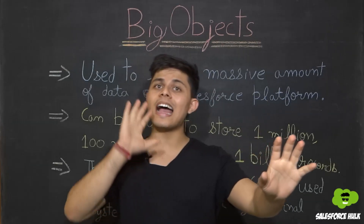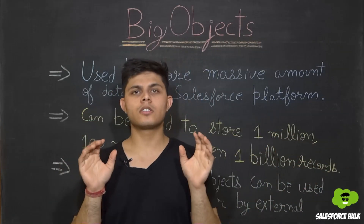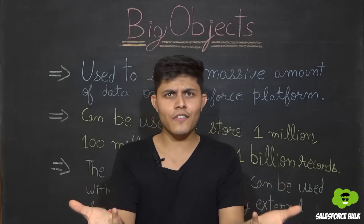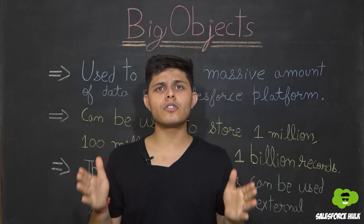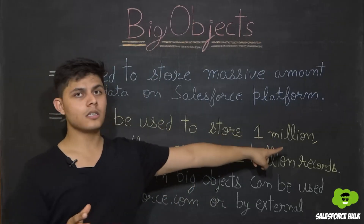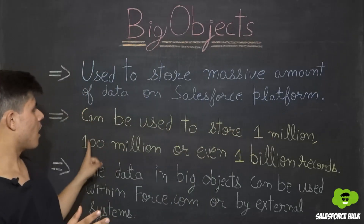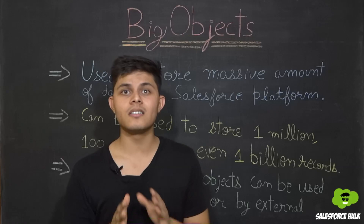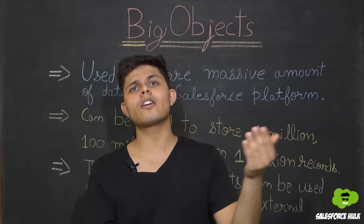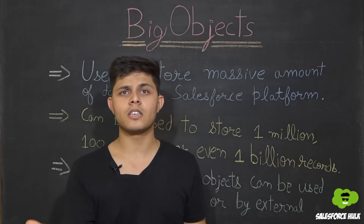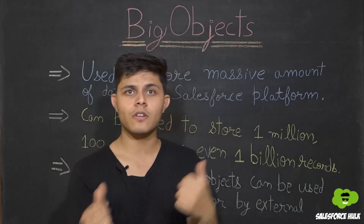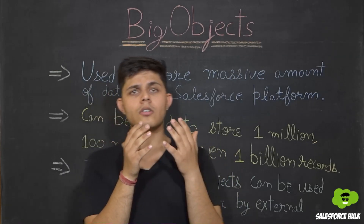This is basically the difference between standard and custom objects versus big objects. What I mean by massive amount of data is that you can store 1 million, 100 million, or even a billion records in big objects — something you cannot do with standard or custom objects.